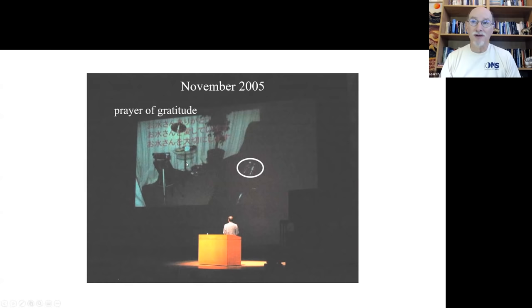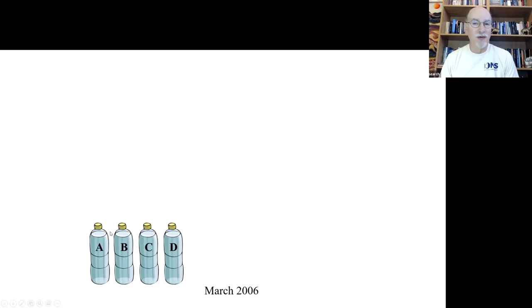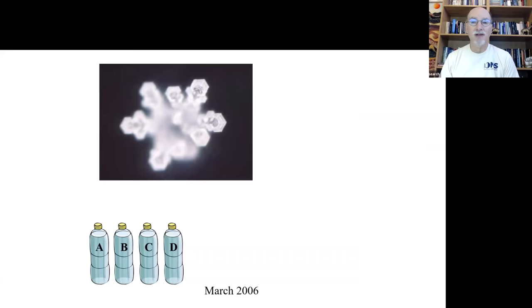So between Tokyo and our laboratory is something like 6,000 or 7,000 miles. So that's the distance that they were doing this experiment. This is the prayer of gratitude. And this is actually, this picture is the inside of our laboratory. So we sent them four bottles. And we just labeled them A, B, C, D. Two of them were the ones they treated and two were the controls. And we didn't tell them which was which.